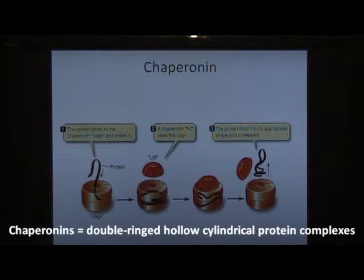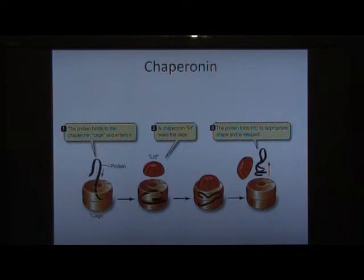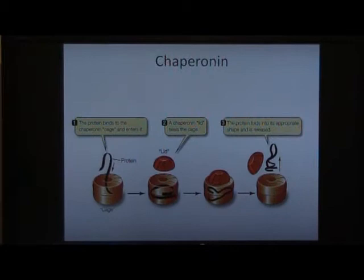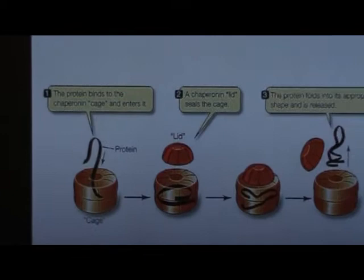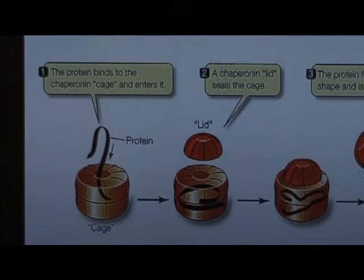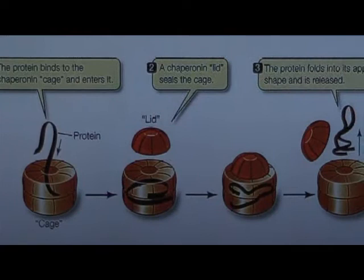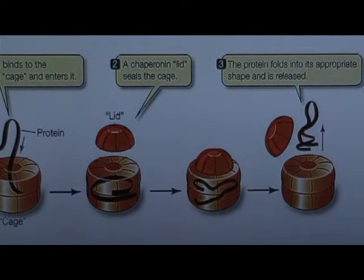Chaperonins are double-ringed hollow cylindrical protein complexes. The nascent or unfolded polypeptide enters the hollow cylinder. Once it's encapsulated within the chaperonin's molecule cavity, a cap is attached to the head of the chaperonin, enclosing the unfolded protein. Lid closure is triggered by the process of ATP hydrolysis.